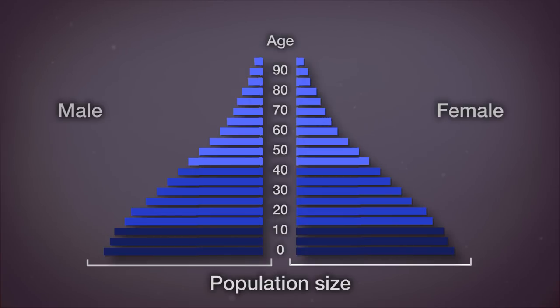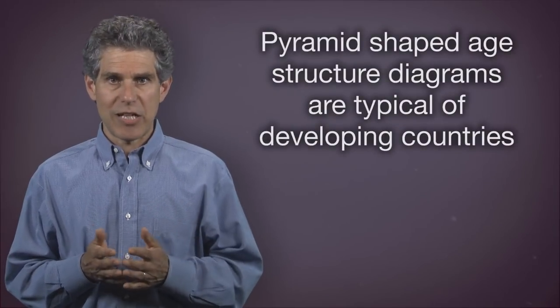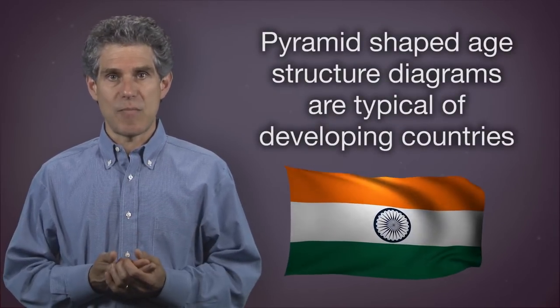The age structure diagram is widest at the bottom and smallest at the top. This means there's a large number of females age 0 to 15 that have yet to bear children, so from the size of that population we can predict how the population will grow. This shape is typical of developing countries such as India, for example.